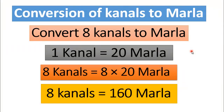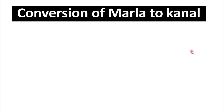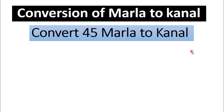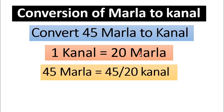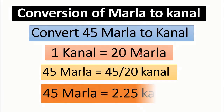Now we will discuss the conversion of Marla into canal. For this purpose, take the example of converting 45 Marla to canal. We know that one canal is equal to 20 Marla. To convert Marla into canal, just divide by 20. So, 45 Marla is equal to 45 divided by 20, which gives 2.25 canal.